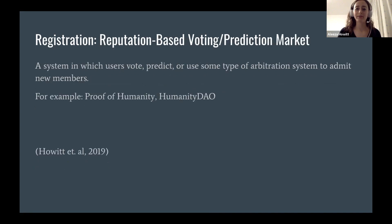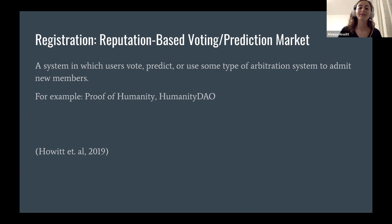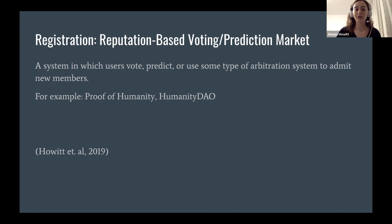There are other systems designed around having people vote on other people, or predict whether people are real, or using some type of a court system to admit new members.